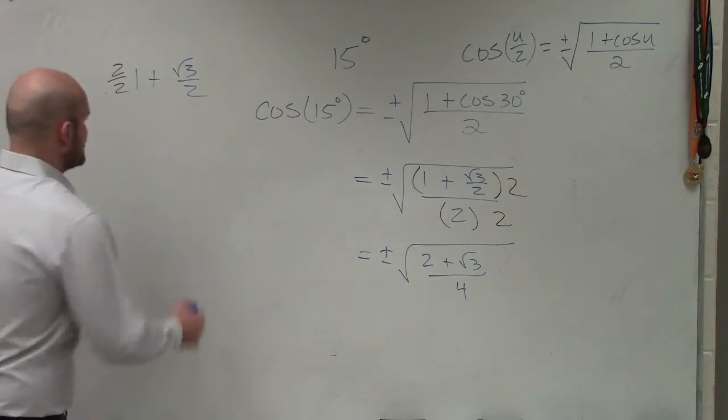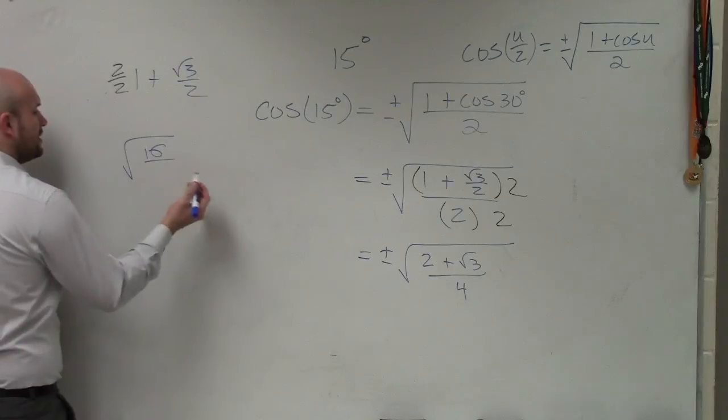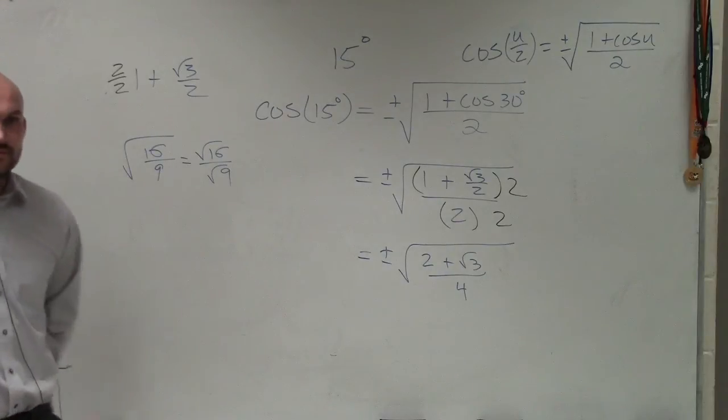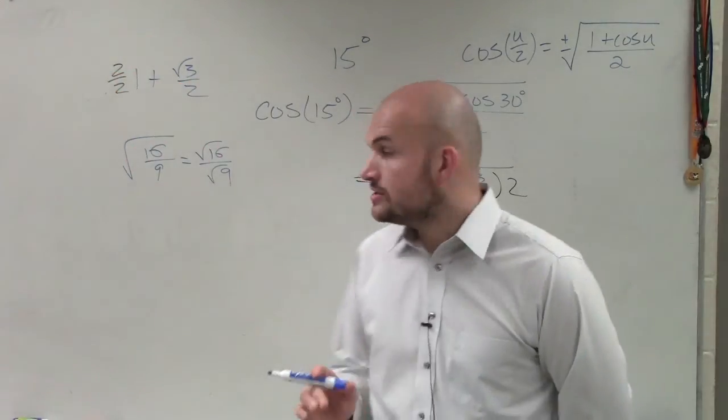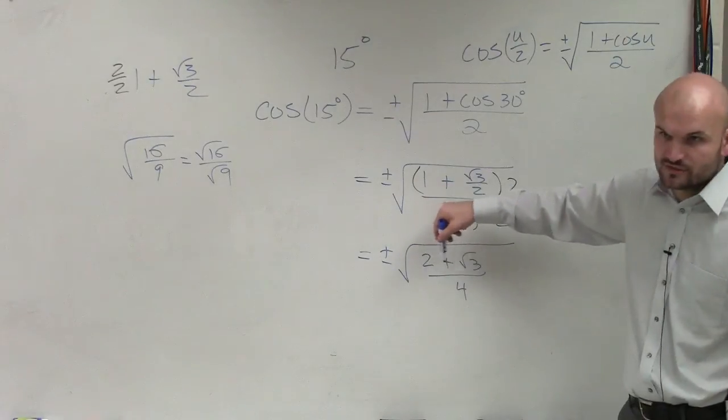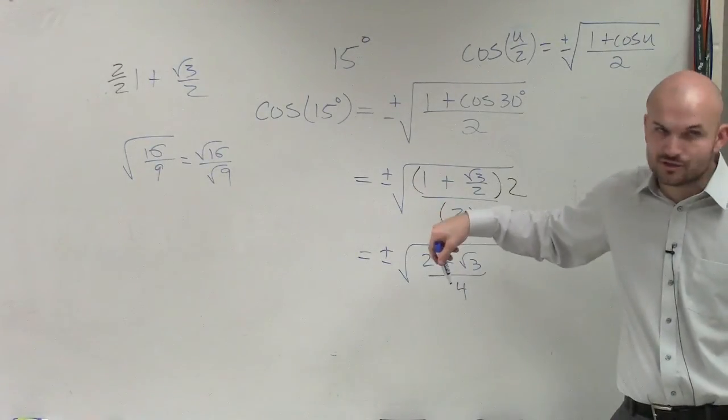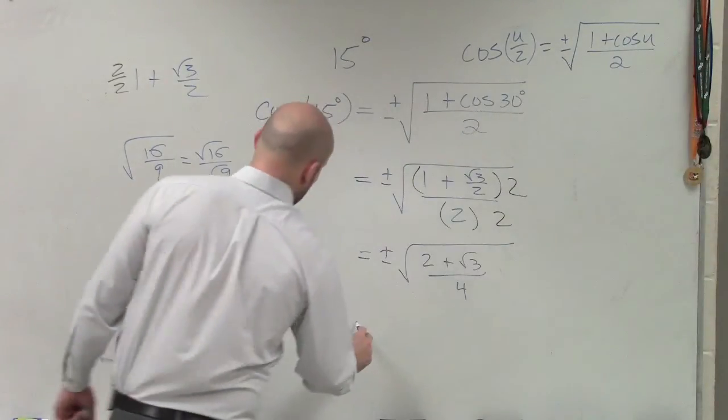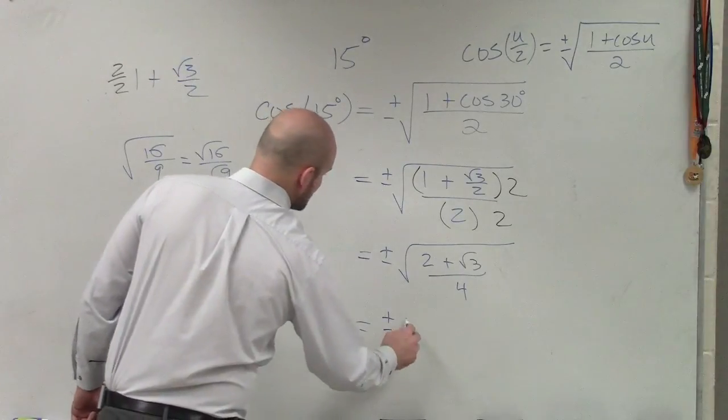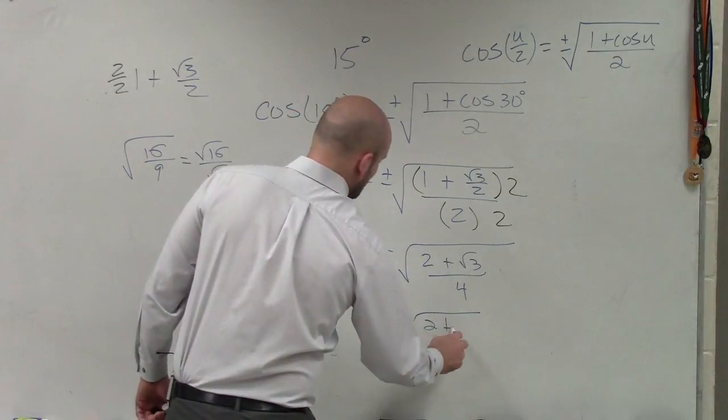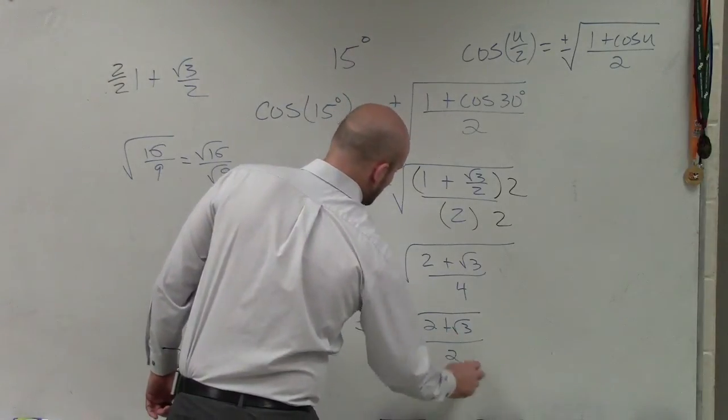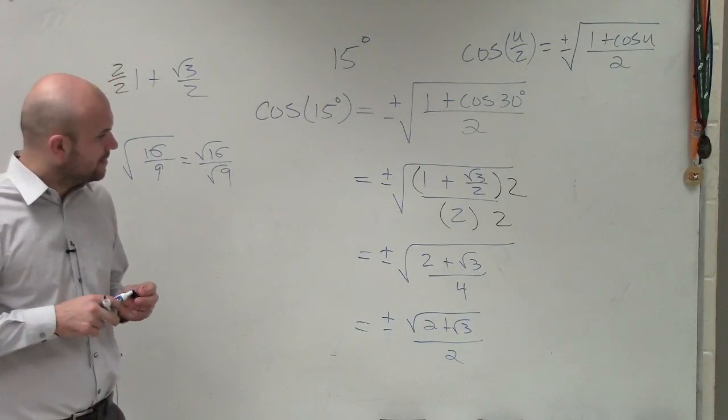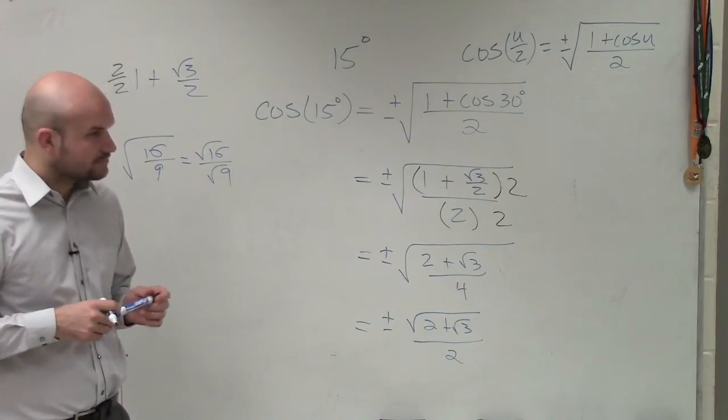And then remember, guys, if I say the square root of 16 over 9, that's equal to the square root of 16 over the square root of 9. The radical distributes amongst division. So therefore, I can rewrite this. I can't take the square root of 2 plus 3. That's an expression broken up by addition or subtraction. You can't distribute. However, I can take the square root of 4. So my final answer will be equals plus or minus the square root of 2 plus the square root of 3 divided by 2. Or you could write that as times 1 half, too.